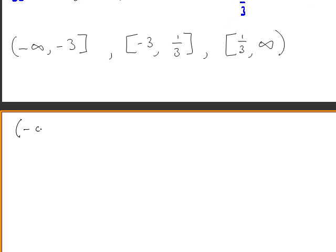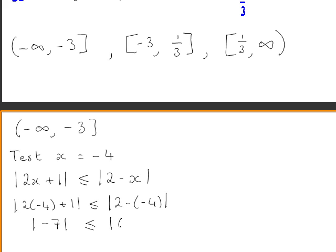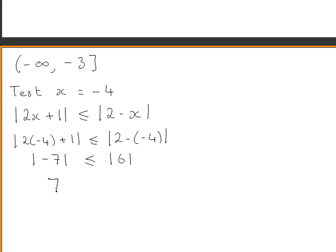For the first interval, minus infinity to minus 3, we test x equals minus 4 in the original inequality: the absolute value of 2x plus 1 less than or equal to the absolute value of 2 minus x. Substituting gives the absolute value of minus 7 less than or equal to the absolute value of 6, which gives 7 less than or equal to 6. This is false, so this is not the interval where our solution lies.